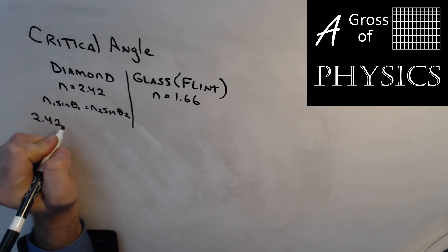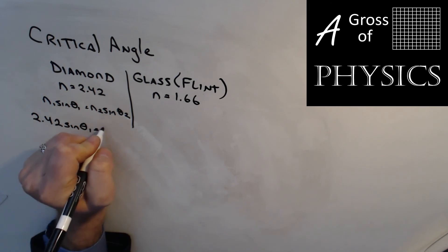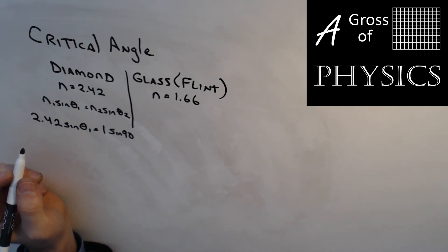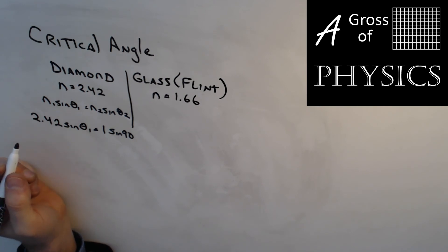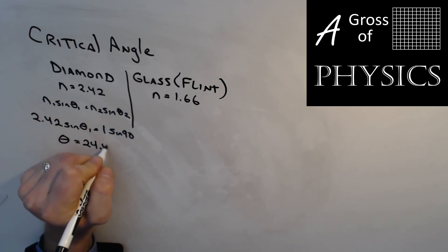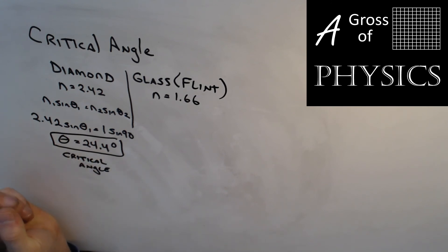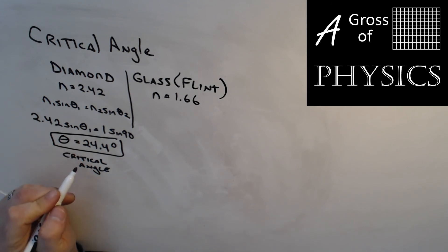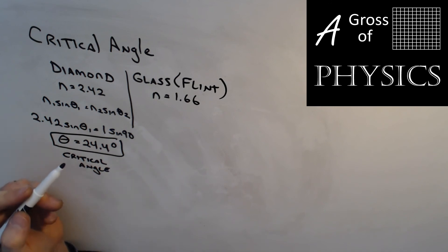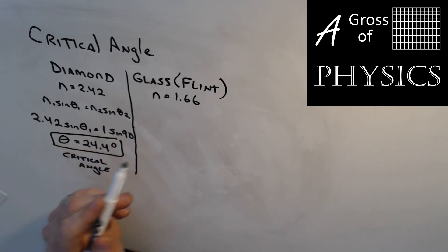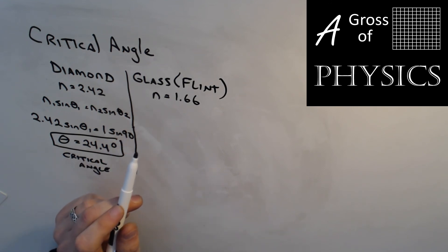So sinθ1 = 1/2.42, giving θ1 = 24.4 degrees. The critical angle for diamond is very small — any light ray greater than 24.4 degrees, all the way up to 90, is trapped inside. Diamond cutters exploit this, cutting the diamond so most light is trapped, bounces around inside, and comes out the top to sparkle.